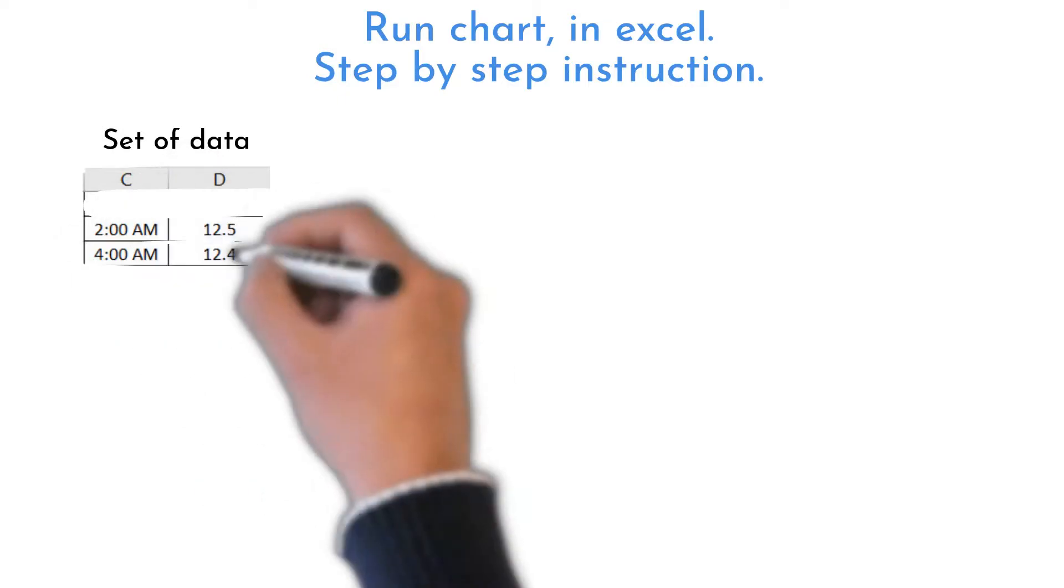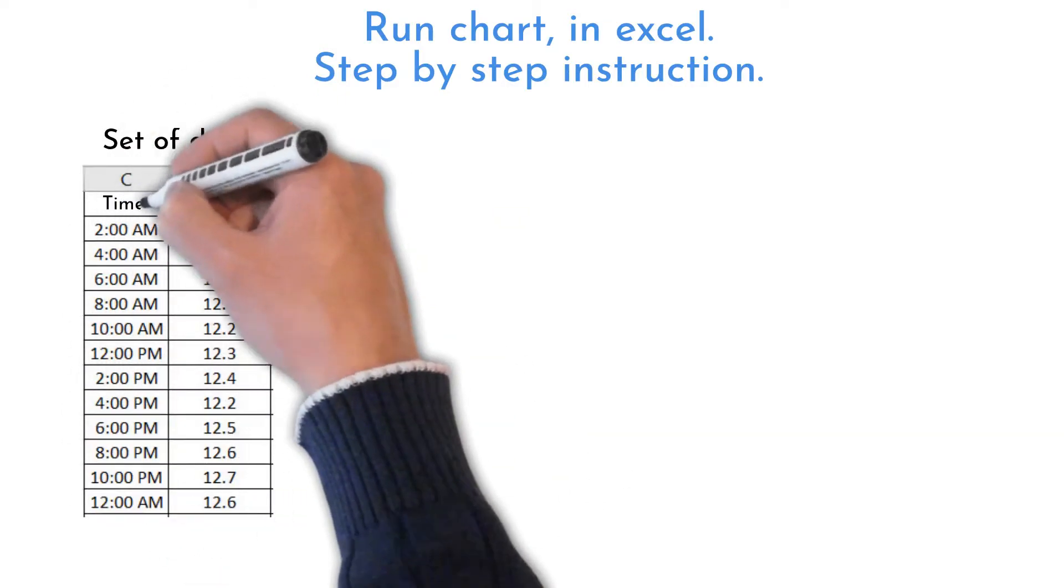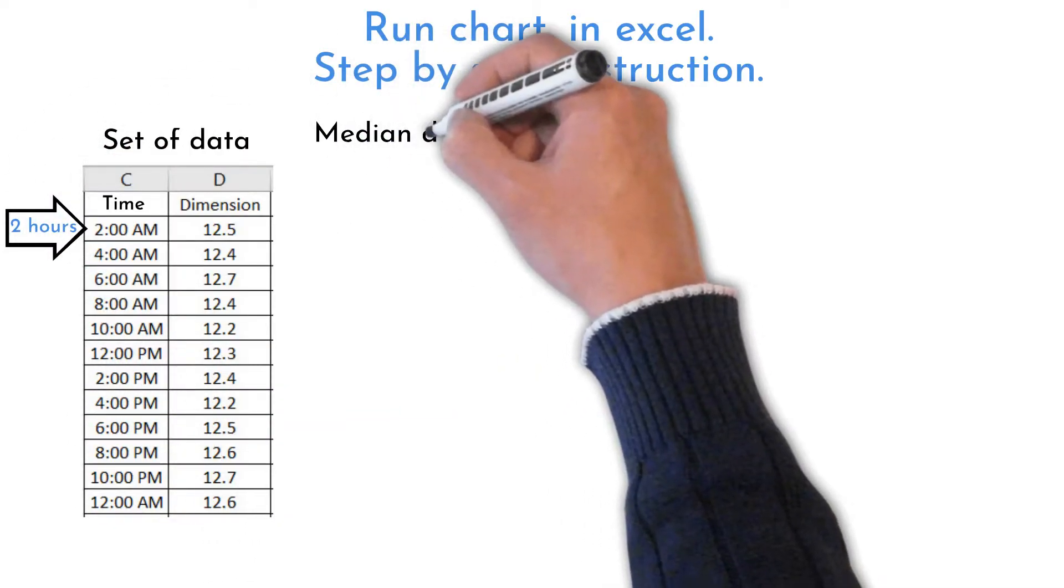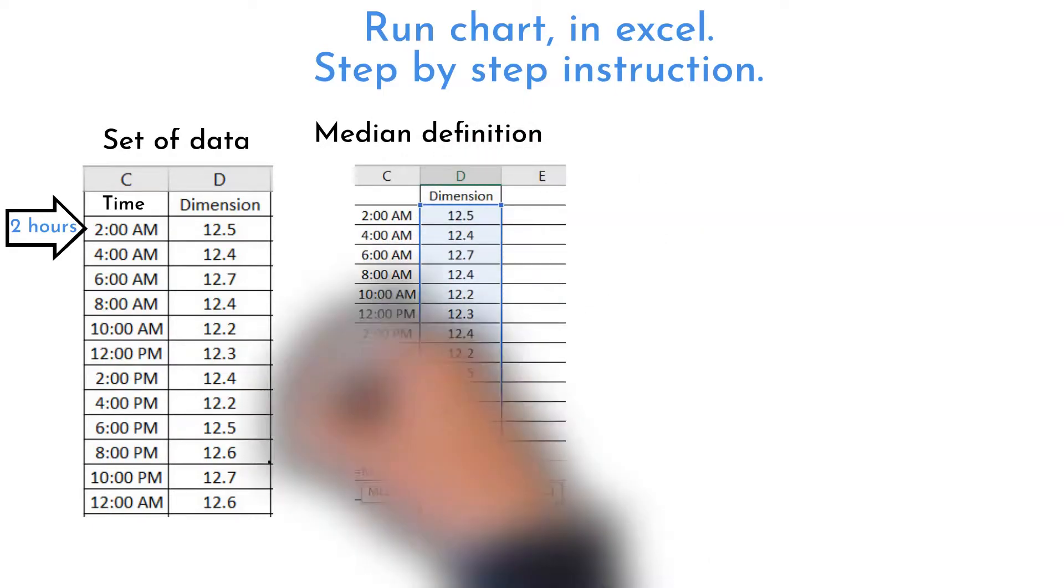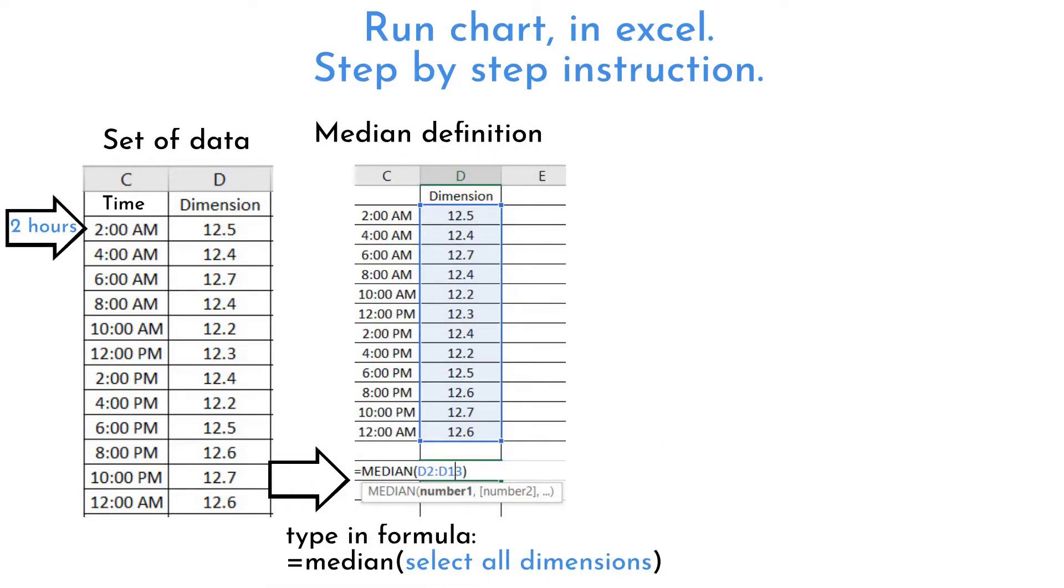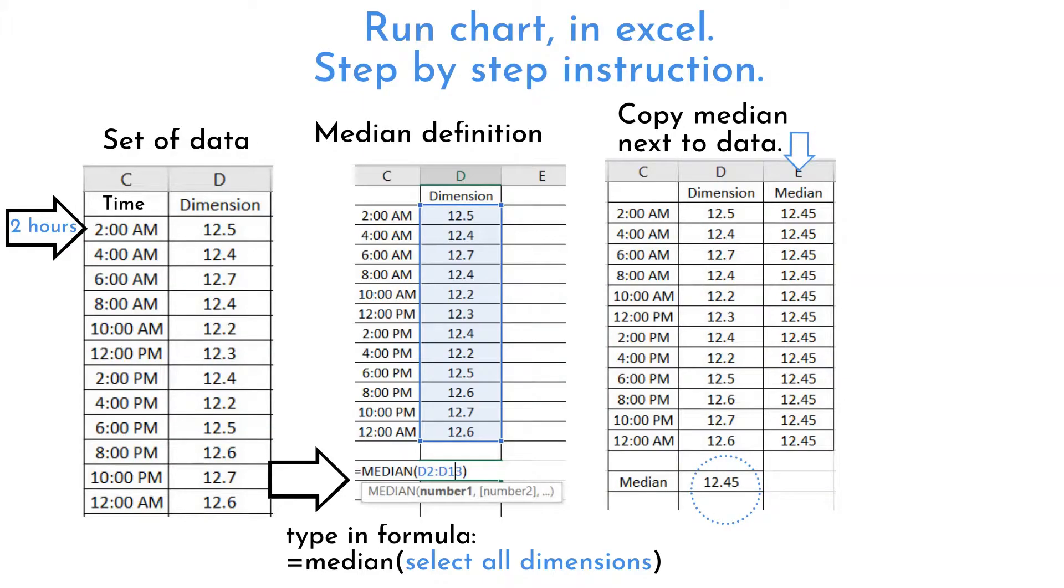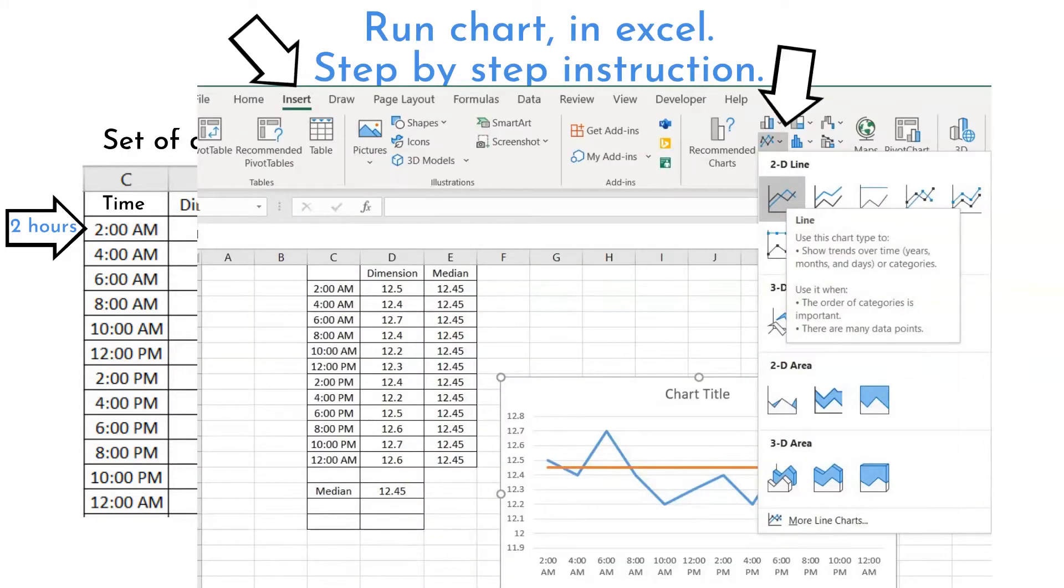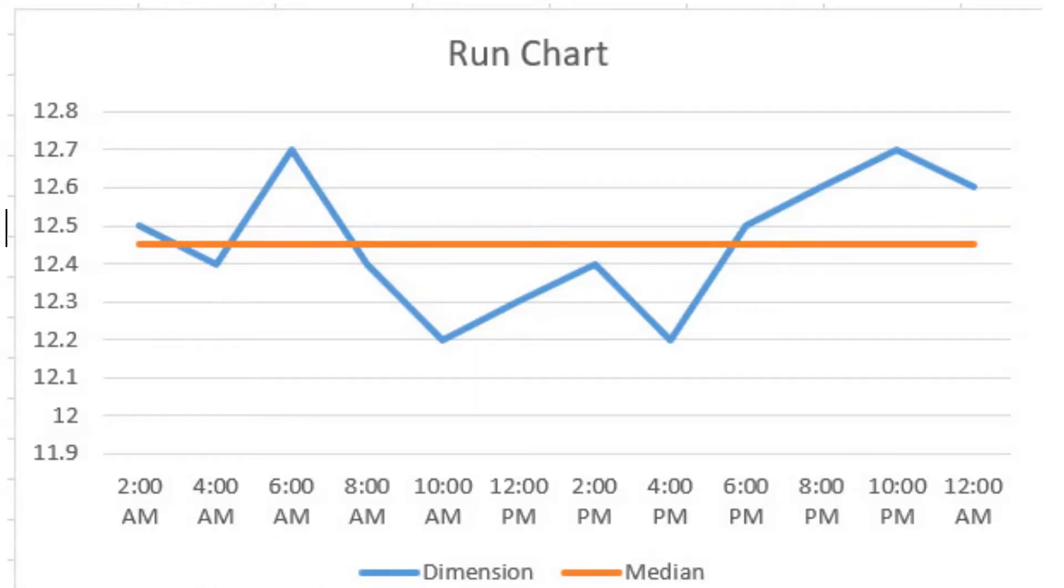Let's have some dimension data. Measurements were recorded every two hours during a day. Run chart will require median, the middle line. Excel has a formula for it. Insert median next to each data point. Select all rows, click insert on upper bar and choose line. And there it is, the run chart.